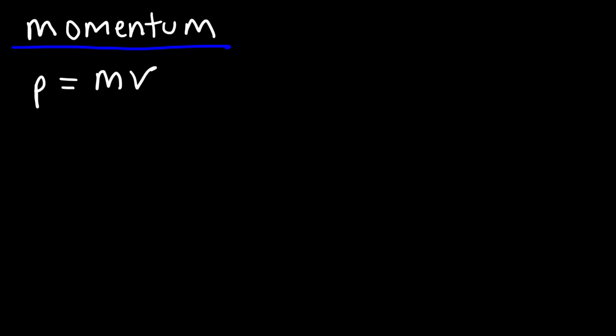Any object that is moving has momentum. A train, for example, that's moving has a lot of momentum because it has a lot of mass. A sports car, which may not have as much mass but is moving fast, also has a lot of momentum. An airplane at rest has no momentum because it's not moving. So momentum is basically mass in motion.